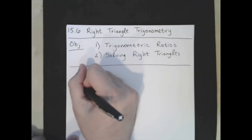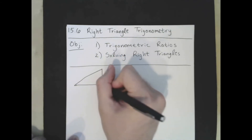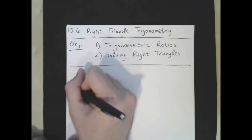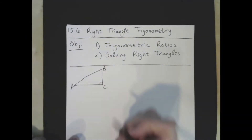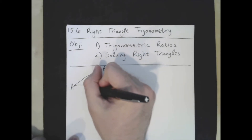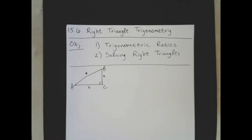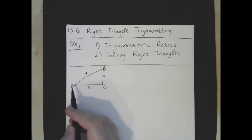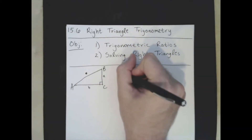Let's take a look at a general right triangle. Typically right triangles are named for their endpoints A, B, C, and they have sides little a, little b, little c. By tradition, the variable always goes across from the angle that it names, so this would be angle A, angle B, angle C at each of these vertices. Now we have three trigonometric ratios: sine, cosine, and tangent.